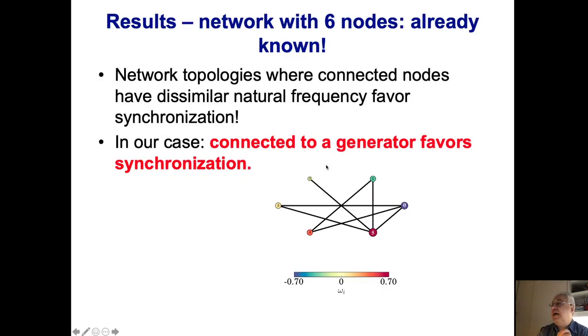Let's take an example. We applied this to a very small system with six nodes, with known results. These are the generators. What we saw is that if you have loads connected to a generator, it favors synchronization. Also, network topology where connected nodes have similar network frequencies initially favors synchronization.